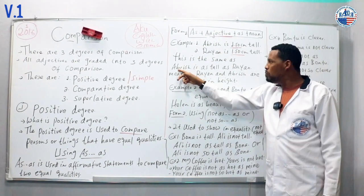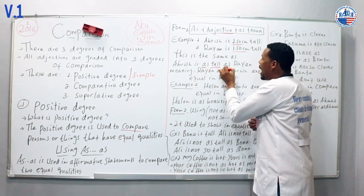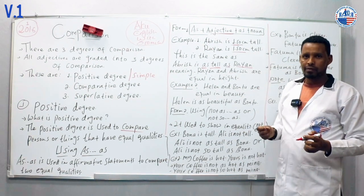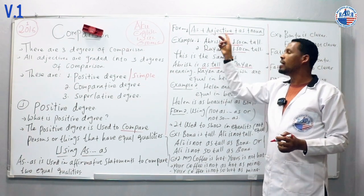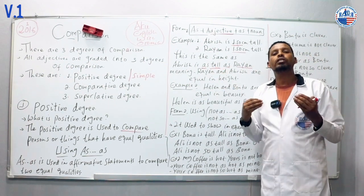So we say: Abrish is as tall as Rayyan. This means Abrish is equal to Rayyan in height.